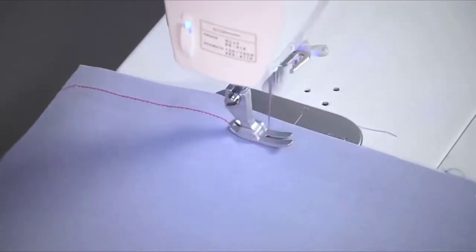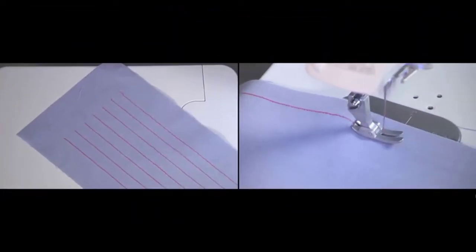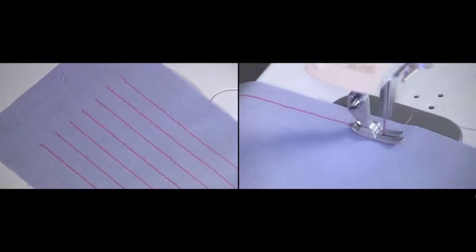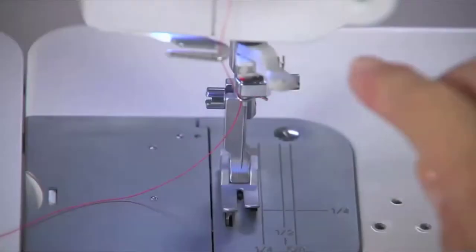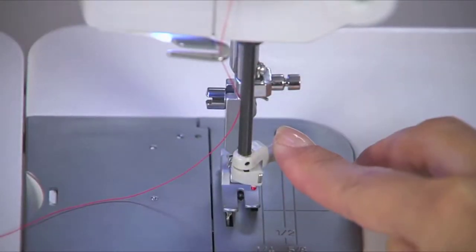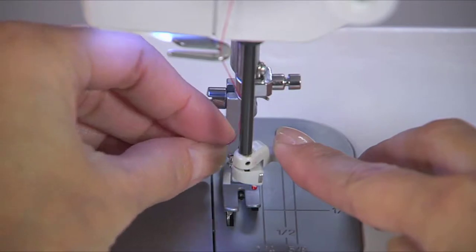Not only can this machine stitch fast up to 1500 stitches per minute, but it has a stitch length of up to 7 millimeters for sewing and basting. Just look at that. What a beautiful stitch. Don't like threading needles? The needle threader saves time and is so easy to use.